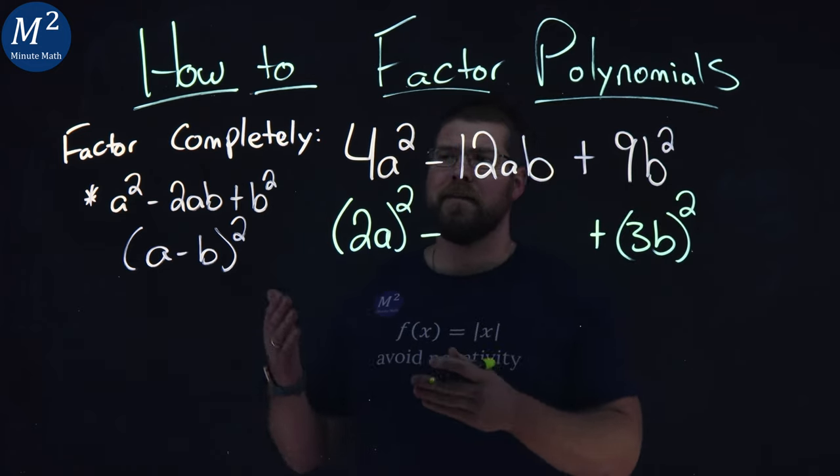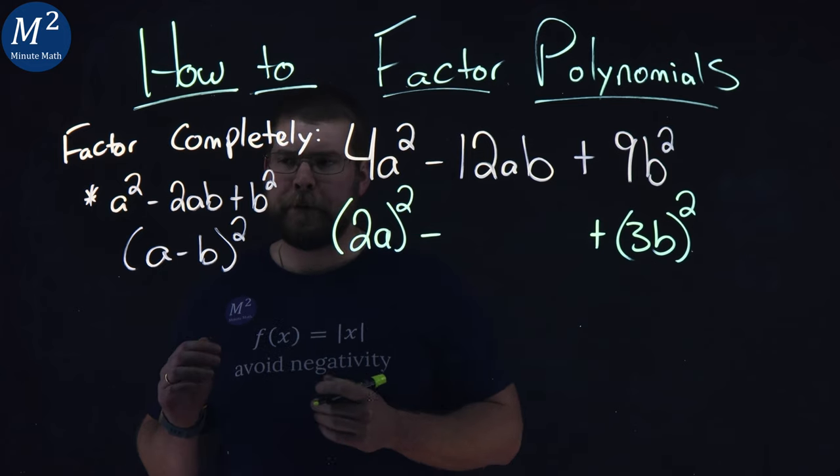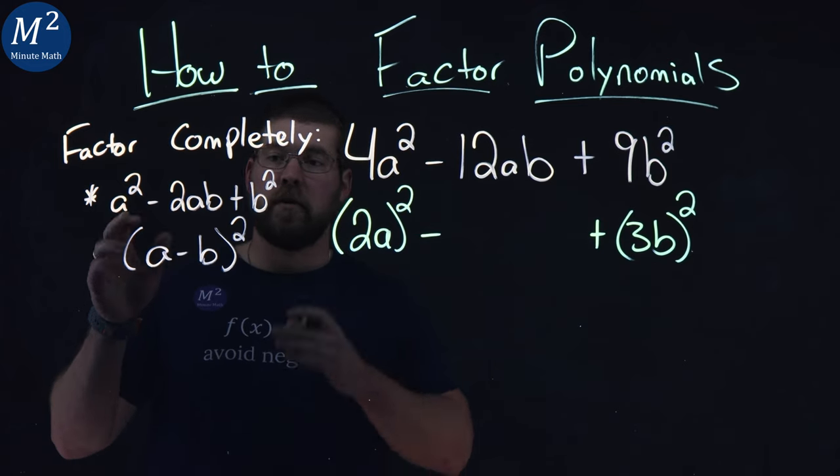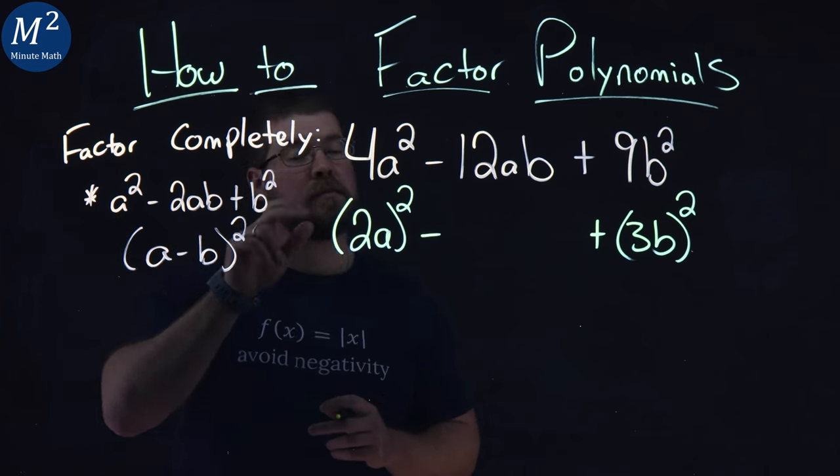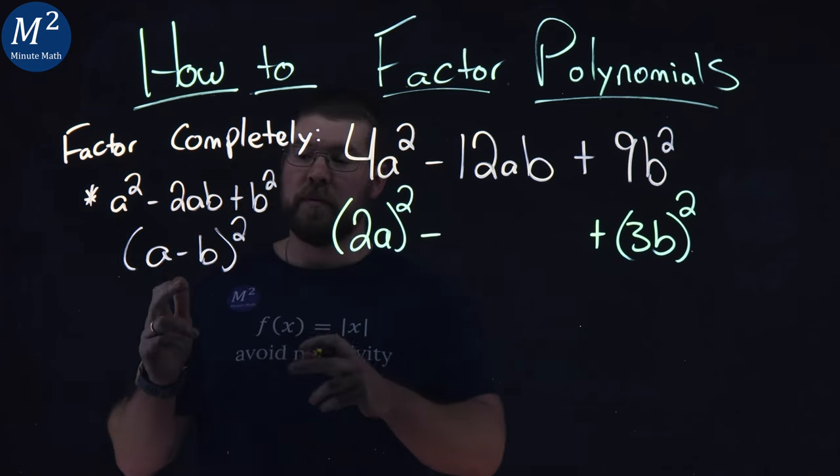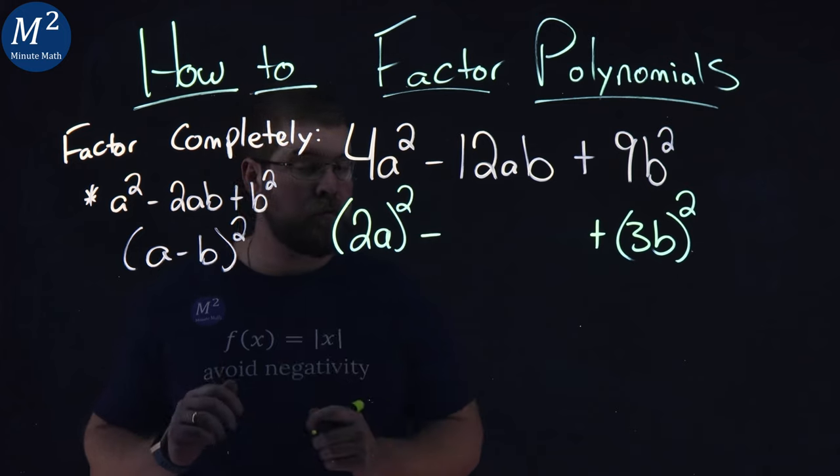Now, if you remember from before, we had a nice little trick here. If we can write our original polynomial in the form of a² - 2ab + b², that factors to (a - b)².